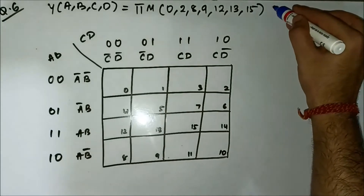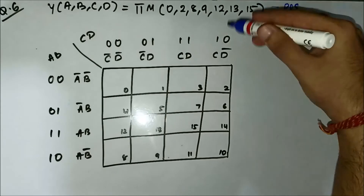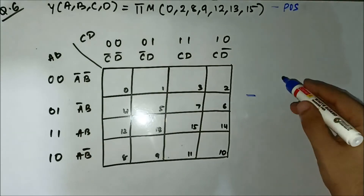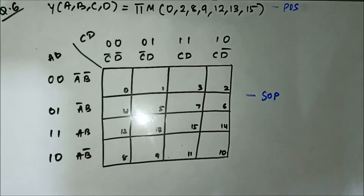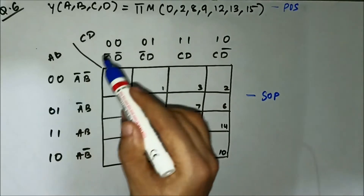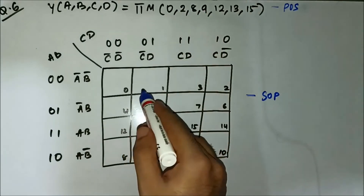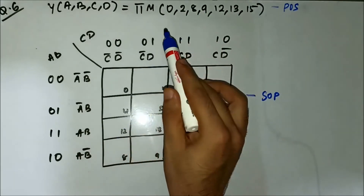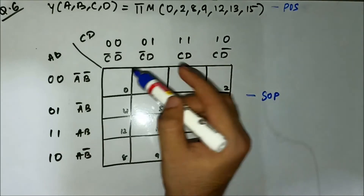Here we have a 4-variable POS expression given in terms of the max term values, and we have a 4-variable SOP KMAP. The max term values are: 0, 2, 8, 9, 12, 13, 15.